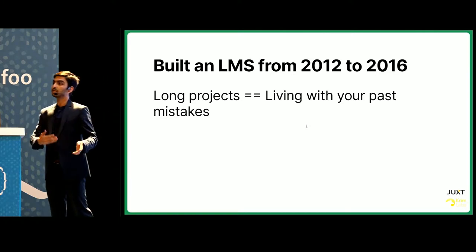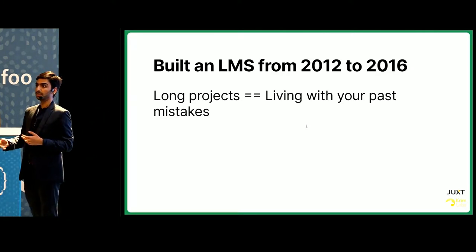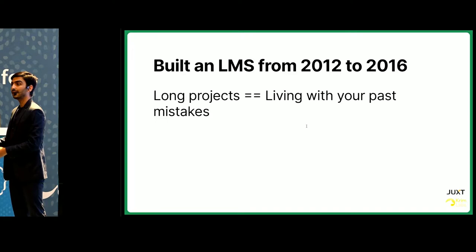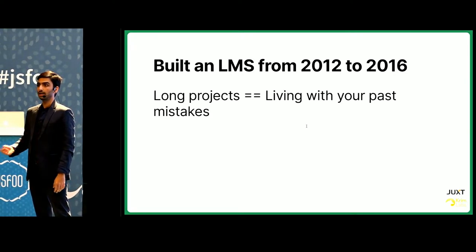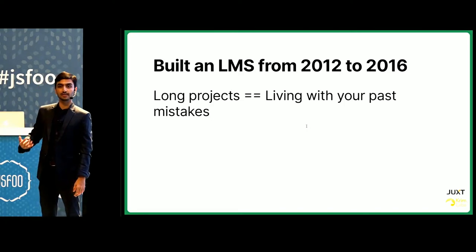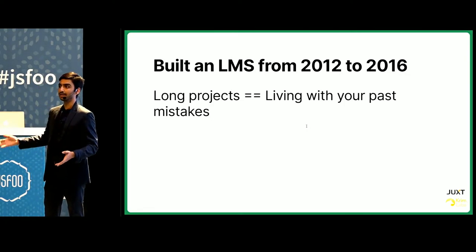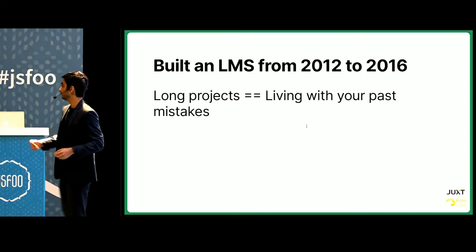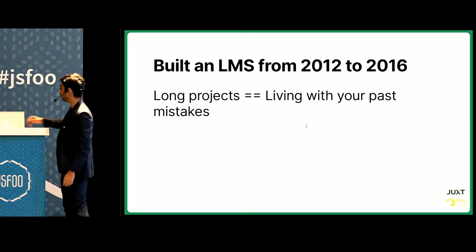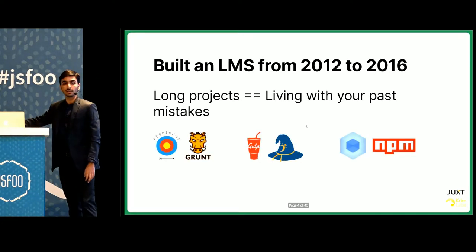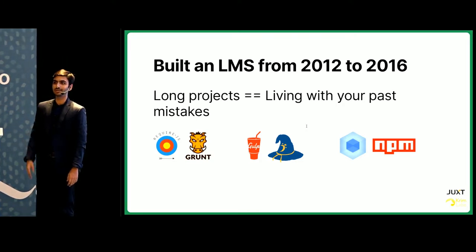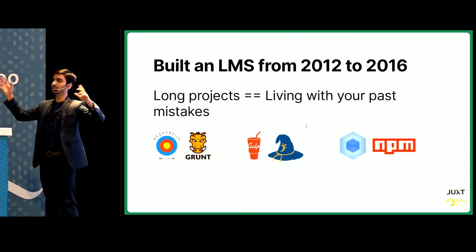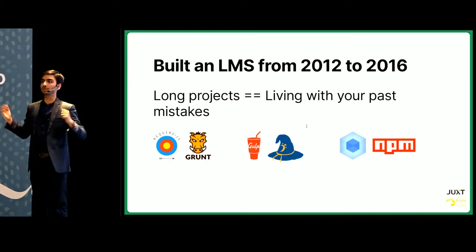When the business would come to me with some feature requests or bugs, I would go back to the application and see that the router I depended on had been deprecated, or the state management I depended on had been replaced by Redux or another framework. In the span of four years, I changed the build system three times — it was funny to see the entire community move from Grunt to Gulp overnight.